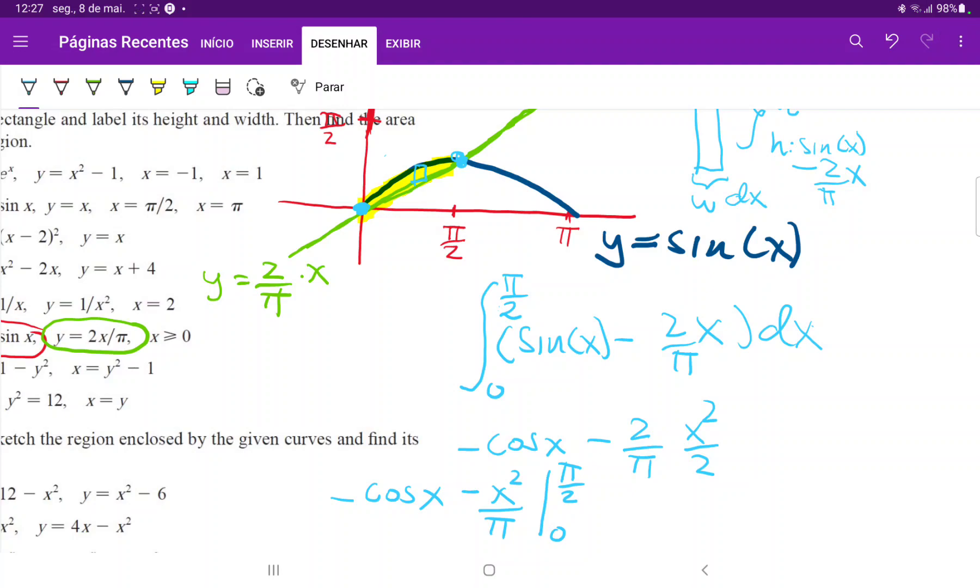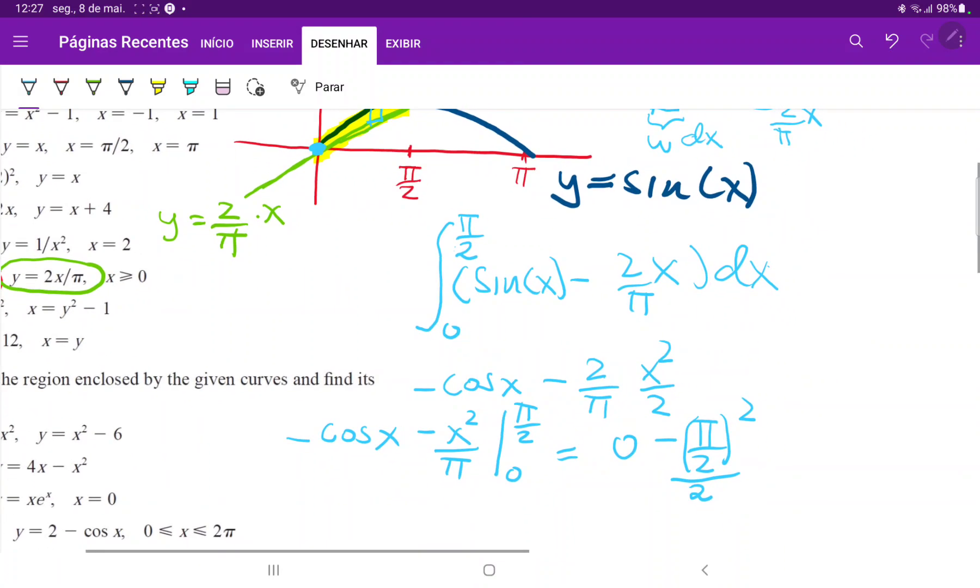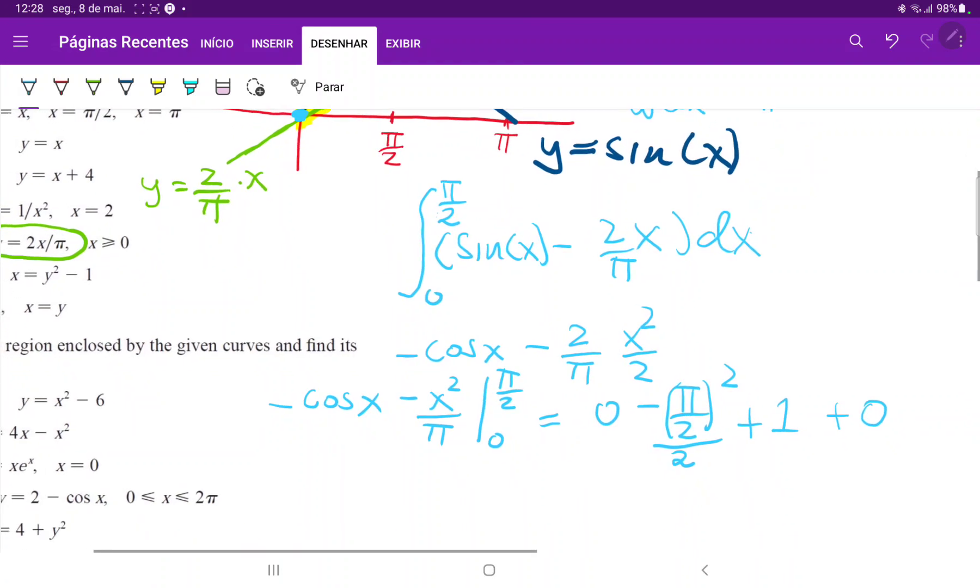So now all that's missing for us is to apply our boundaries. So minus cosine of pi over 2 is just 0, so this is equal to 0, and then minus pi over 2 squared divided by 2. And then let's apply the lower boundary. So minus cosine of x, cosine of 0 is 1, so minus minus 1, that is equal to plus 1. And then for this one, for the lower boundary, we go minus 0 squared over pi, which is just plus 0 because it's minus minus.